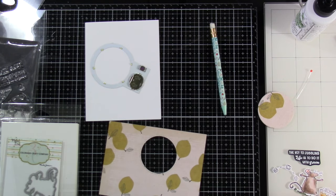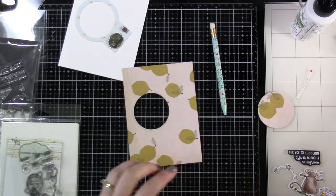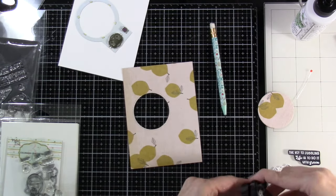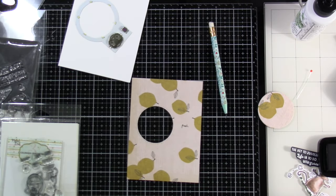I'll bring in that Pear Blossom Press stamp set and ink that up with some Versafine Claire Nocturne ink. I can stamp the word push right over the dot that I put down with my pencil. So now you know, or the recipient will know, where to push.